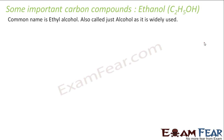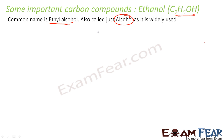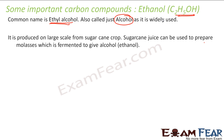Ethanol's formula is C2H5OH. The IUPAC name is ethanol and the common name is ethyl alcohol. It is also called just 'alcohol' because it is widely used. So when you say alcohol, you mean ethyl alcohol.